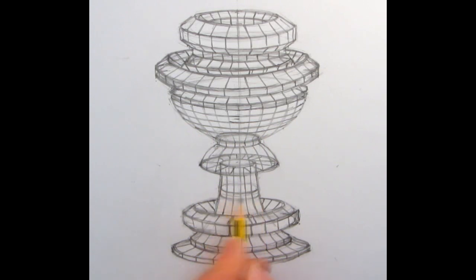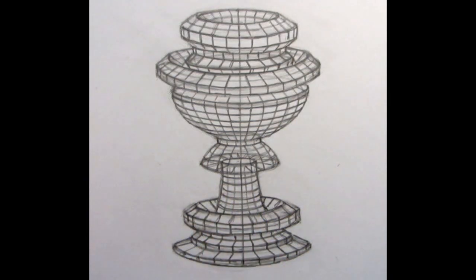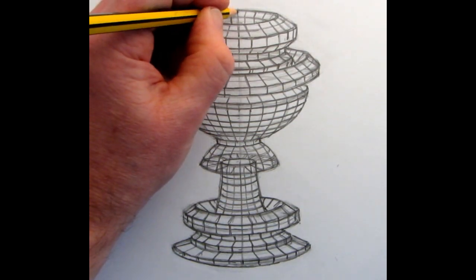And then just to finish off this drawing at the very end, all I need to do is just make the line of symmetry darker down the center.